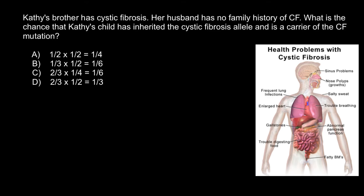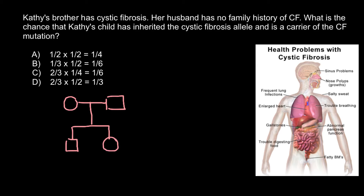First of all, let's draw a pedigree of the family, starting with Katie's parents. Every one of us has two parents — a father and a mother — and Katie also has a mother and father. In this family, they have two children: one is a male (Katie's brother), who is affected with this genetic disorder. That means his genotype must have two recessive alleles — one from each parent — so both mother and father must be carriers.